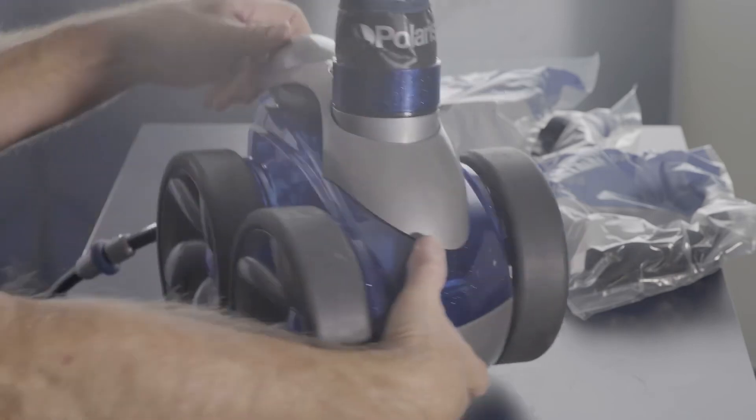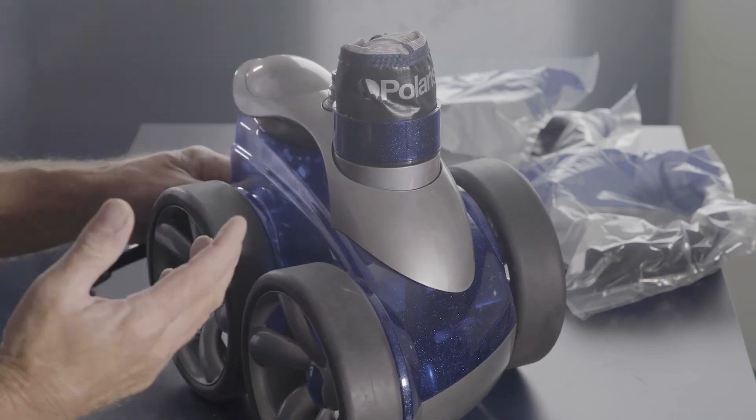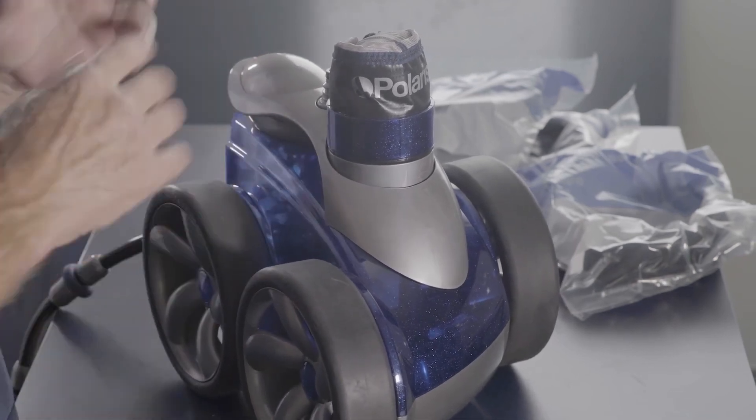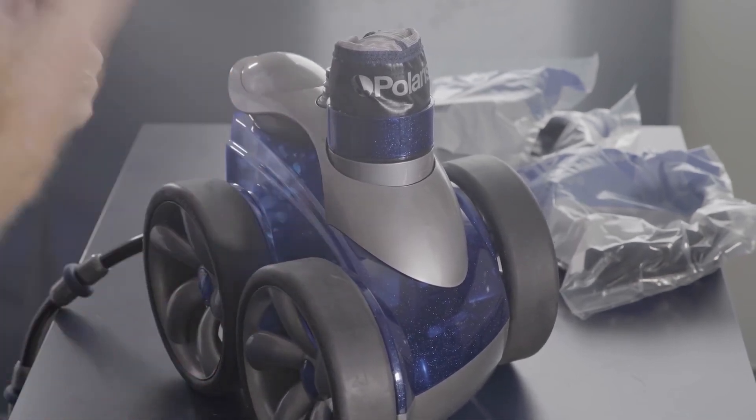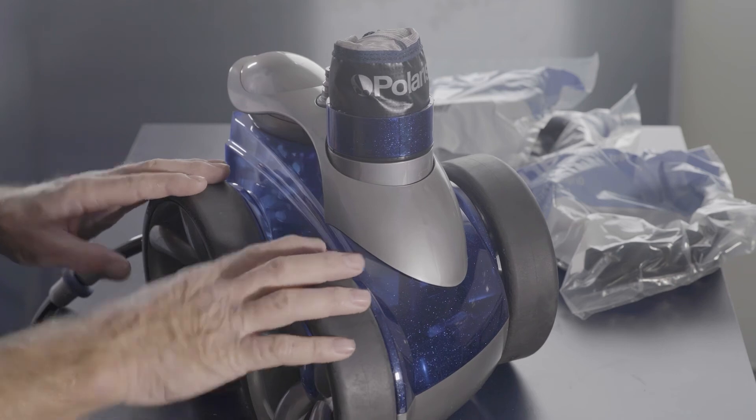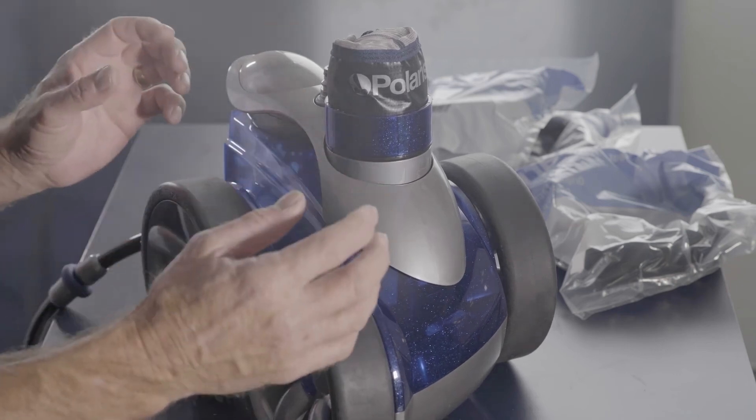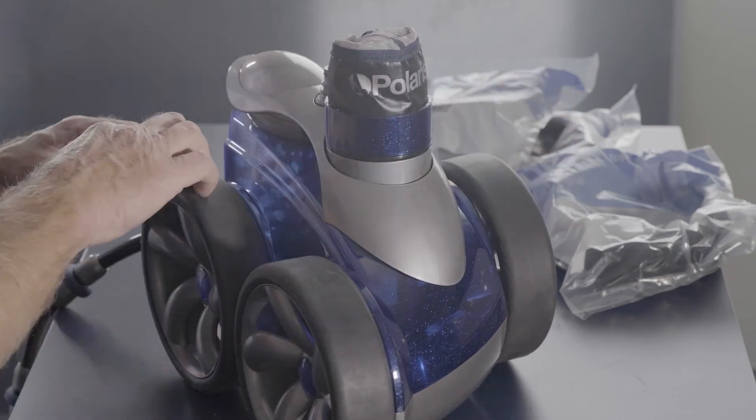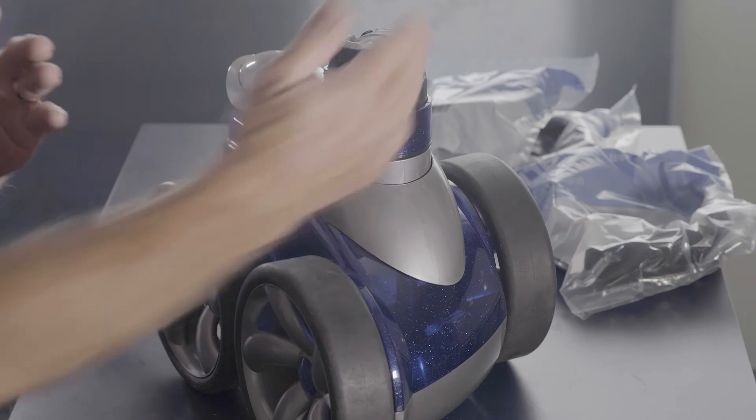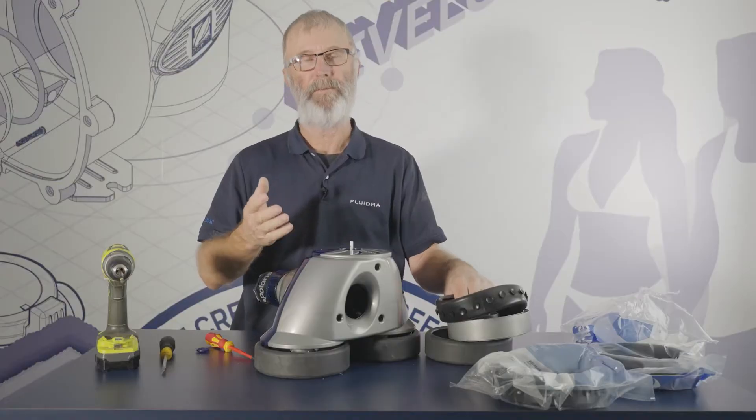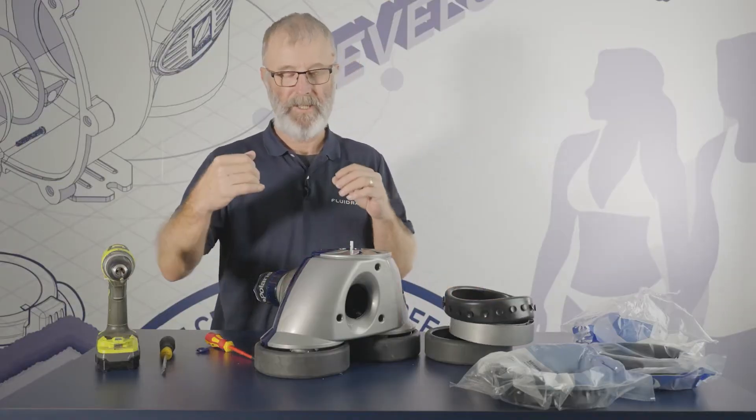Now, if you were going to install this on a tile pool or a slippery surface pool, you'll want to use the posi-tracks. Now, unlike the 280, all you've got to do is just change the tires and put the posi-track tires on. You put them on all three, where the 280 only has the front and single side. If you wanted to put the posi-track tires on, you just throw them on all three wheels.